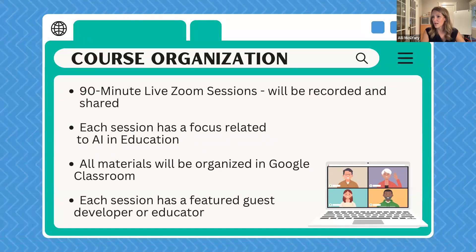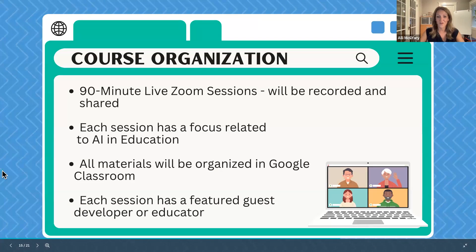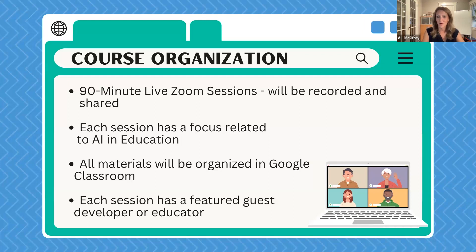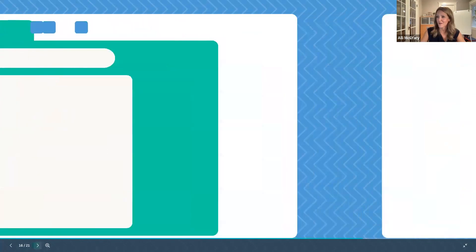The way the course will be organized is we will have a 90-minute live session every month, on a Monday — usually the second or third Monday — and we have that on the website. The session will be focused on an aspect of AI related to education, and the materials will all be organized in Google Classroom. I also decided to have a featured guest — a speaker, a developer, an educator, or someone on the forefront of AI and education — to come and share their experience. That'll be about the last 20 minutes of each session, and I already have a bunch of really interesting people lined up for the first four sessions.